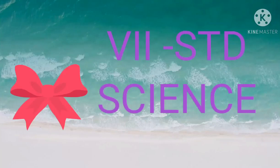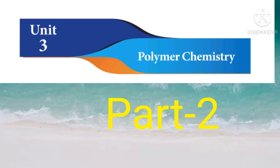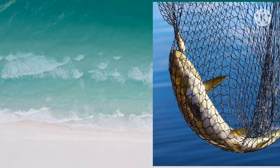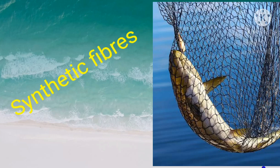Hello children, this is 7th Standard Science, Unit 3, Polymer Chemistry, Part 2. In our last class, we have learned about natural and synthetic fibers. Now, we will learn about types and uses.